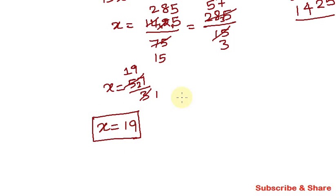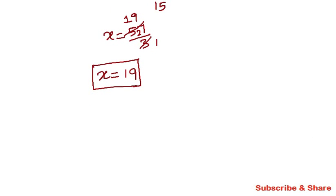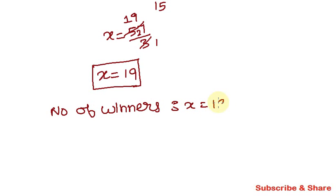So the number of winners is x, and x is equal to 19. Total participation is 63, so non-winners are 63 minus x, which is 63 minus 19, giving 44 non-winners.